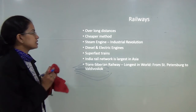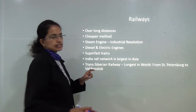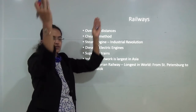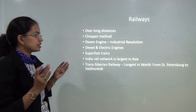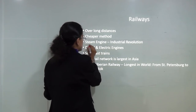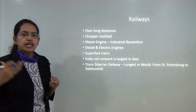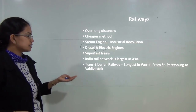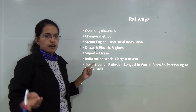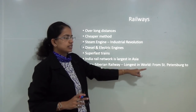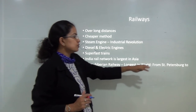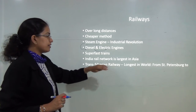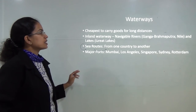Railways can move over longer distances and are cheaper than roadways. With the advent of the Industrial Revolution, steam engines came into prominence, followed by diesel engines, and finally electric engines — and now we have super-fast trains. India's rail network is the largest in Asia. However, the longest rail network in the world is the Trans-Siberian Railway, which runs from Saint Petersburg to Vladivostok in Russia.